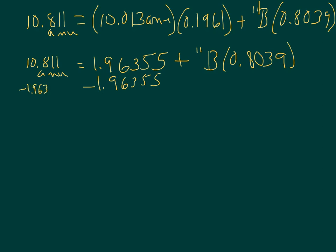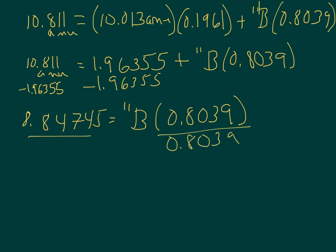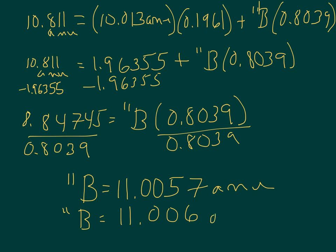So 10.811 minus 1.96355, and I get 8.84745, and that's going to be equal to the B-11 isotope multiplied by 0.8039. So now let's divide both sides by 0.8039, and I get the isotopic mass for the B-11 isotope to be 11.0057 amu. If we keep three decimal places as on our periodic table, then we're going to end up with 11.006 amu.